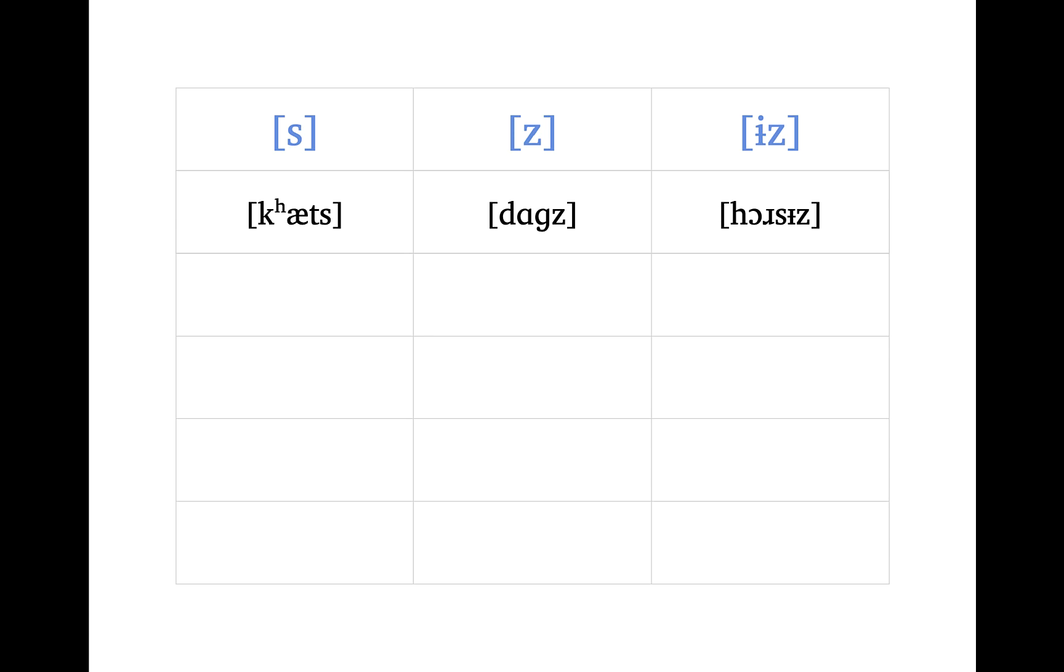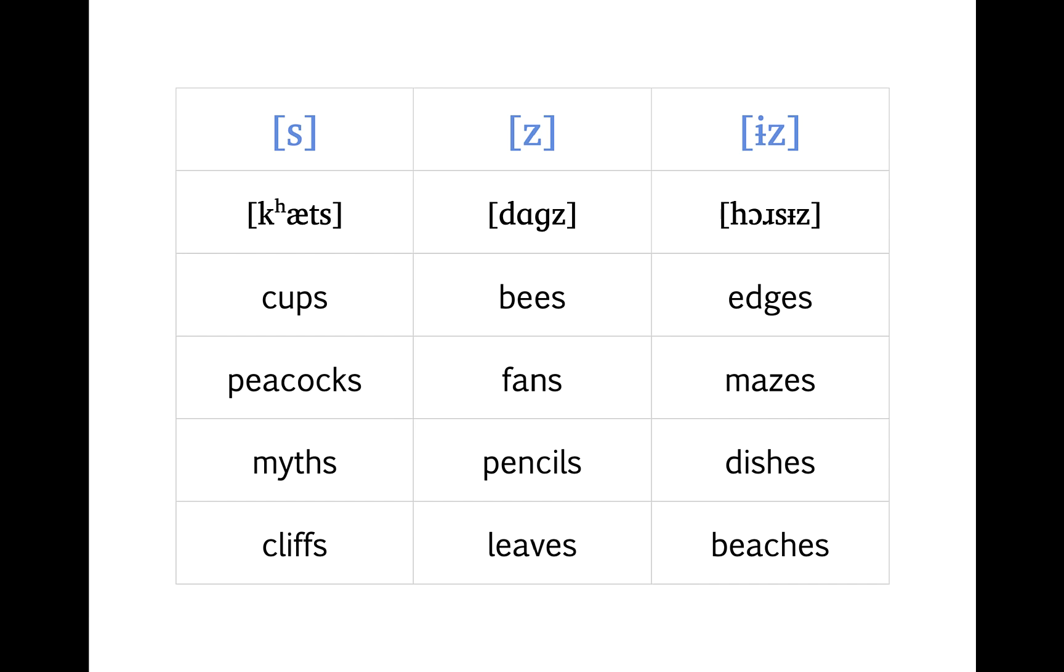Here are some other words with each of these different plural forms. Cups, peacocks, myths, cliffs take the voiceless [s]. Bees, fans, pencils, leaves take the voiced [z]. And edges, mazes, dishes, beaches take the [ɪz] form.